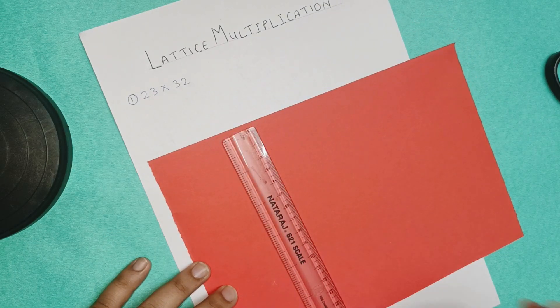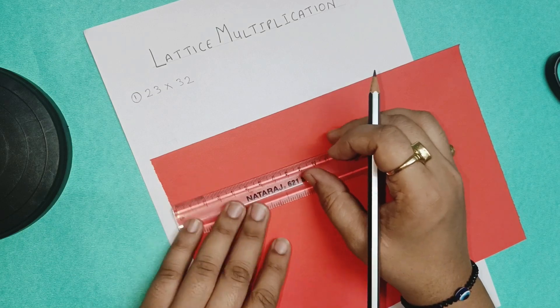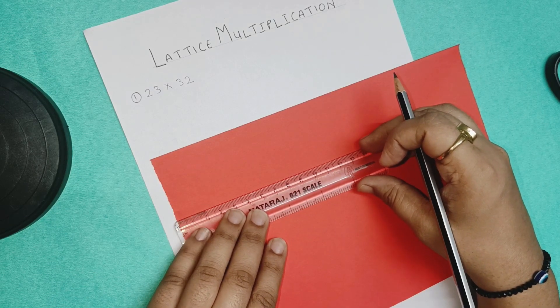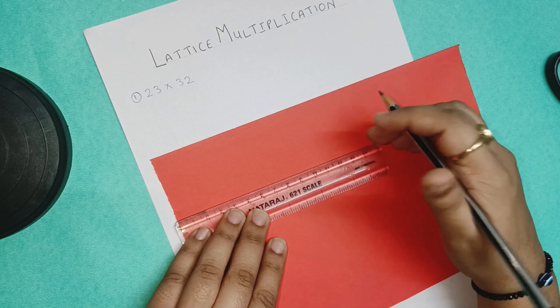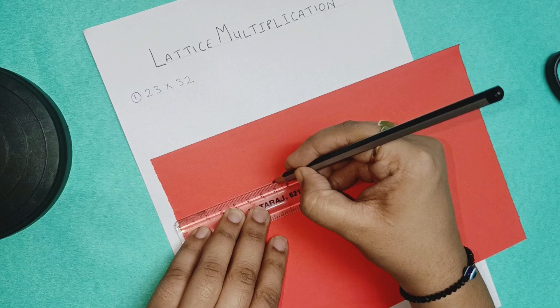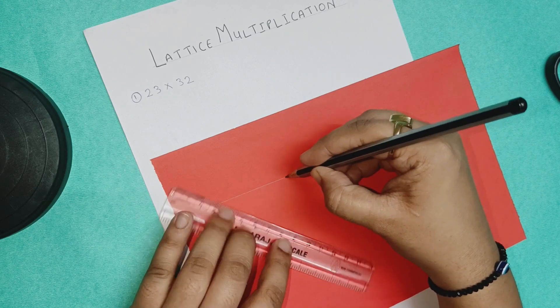Now let us start. We have to take the colored sheet or origami sheet and we have to draw a rectangle. You can take rectangle of any measurements. I am making it of 8 centimeter into 5 centimeters.